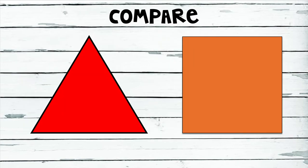Now that we described those two shapes separately, let's compare them together. How are they alike? How are they different? Pause this video to think about all the ways they are alike and different. These are both 2D or flat shapes. No matter how you turn them, they're still the same shape. However, they're different because a square has four equal sides and a triangle has three sides that don't always have to be equal. A square has four vertices, but a triangle has three.